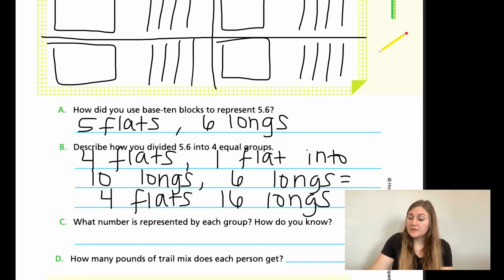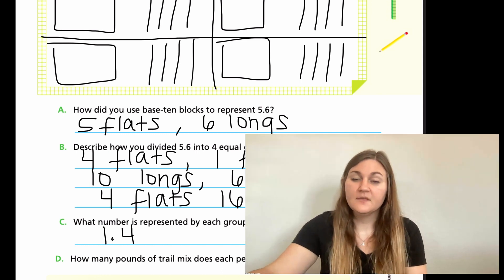Alright, so for C, what numbers are represented by each group? So we have one flat, which equals one whole point, and then in the tenth, we have a four. So that's going to be 1.4. So how many pounds of trail mix does each person get? Each person gets 1.4 pounds. Alright, great job on this. Go ahead and finish up the rest of your problems and I'll see you back for lesson three.